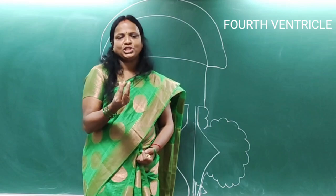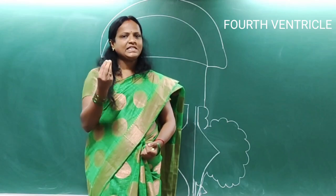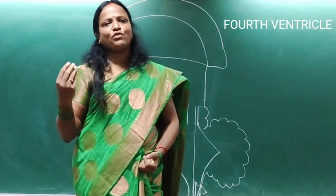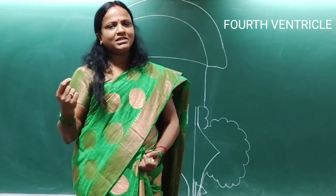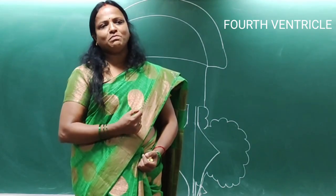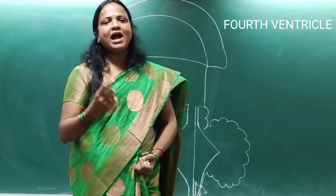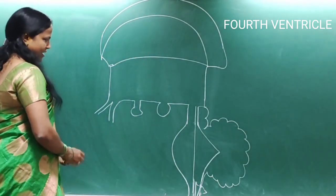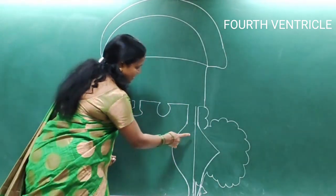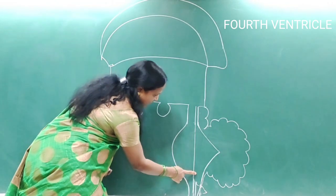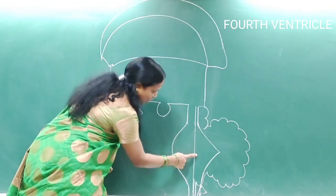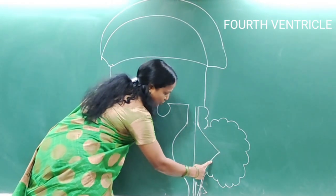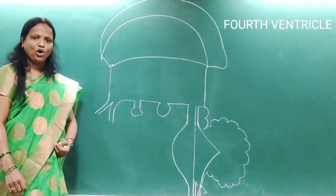The major portion of the CSF leaves the ventricular system through these foraminae — one medial foramen of Magendie and a pair of lateral foramina of Luschka. The anterior wall forms the floor, and the posterior wall forms the roof or dorsal wall.